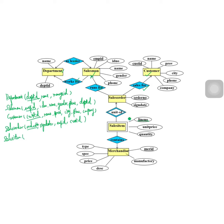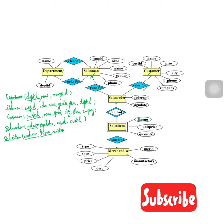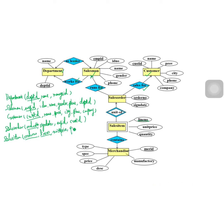Next is sales item, which is a weak entity set. Because it is a double diamond relationship, the primary key of sales order — order number — is part of the primary key of sales item. So the primary key is order number and line number. We also add unit price and quantity as attributes.